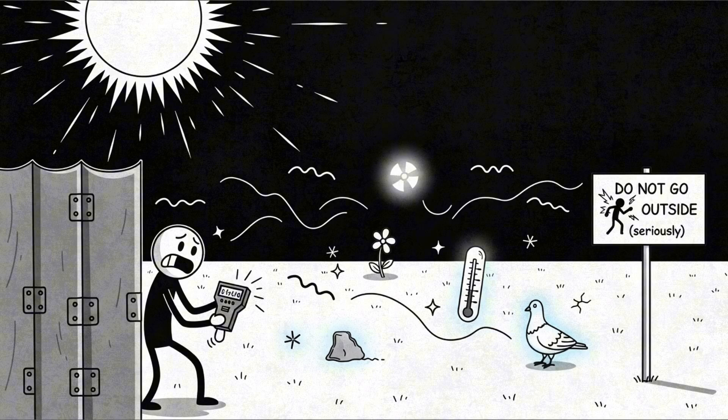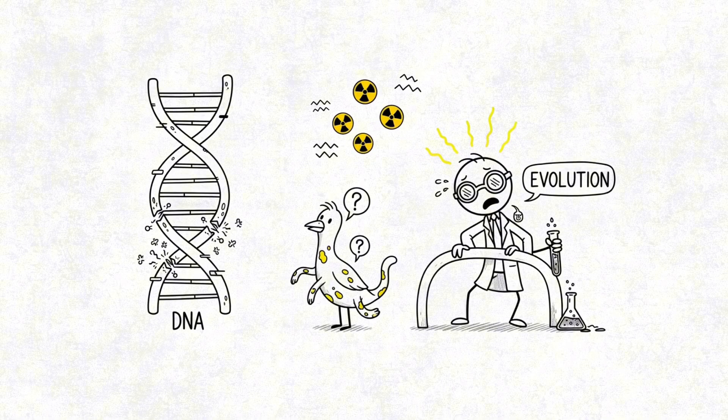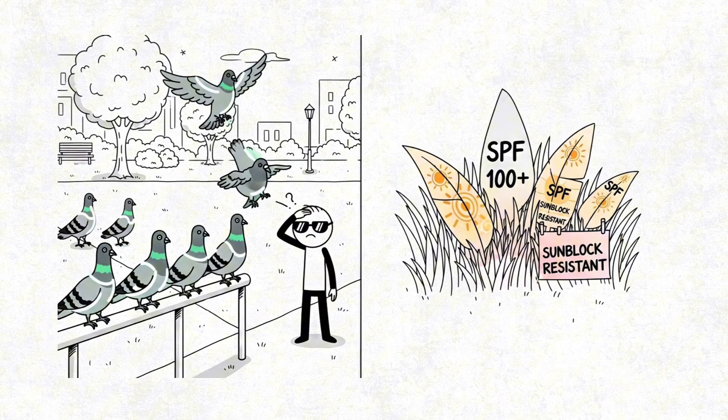Oh, and remember all that radiation? Our DNA doesn't. Mutations increase. Evolution gets drunk. You end up with glow-in-the-dark pigeons and sunscreen-resistant grass.